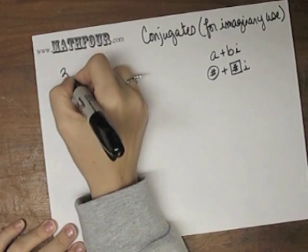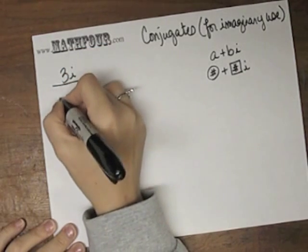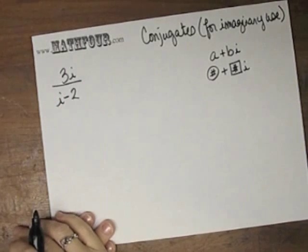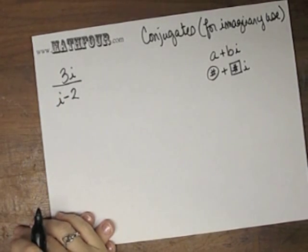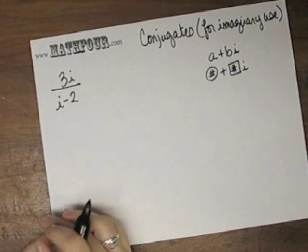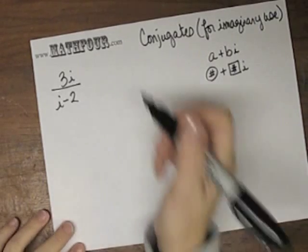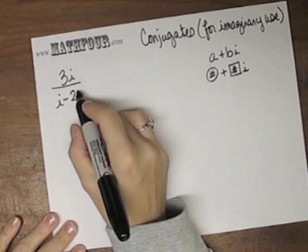So something like 3i over i minus 2 is a rebel, is not in the right form. He needs to be molded and brainwashed. So how do you get there?